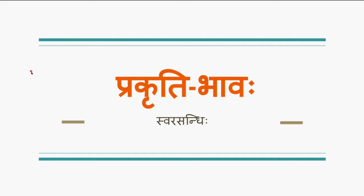So far we have been studying sandhis. We have covered all swara sandhis in this series. Generally we have three kinds of sandhis: swara sandhi, vyanjana sandhi, and visarga sandhi. Swara sandhi itself has six different sandhis. We have studied all six sandhis and learned about all their rules, so we have almost completed all the swara sandhis.